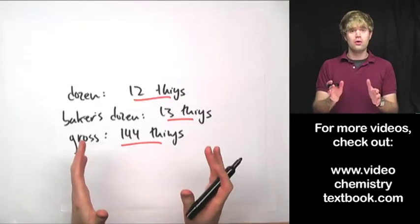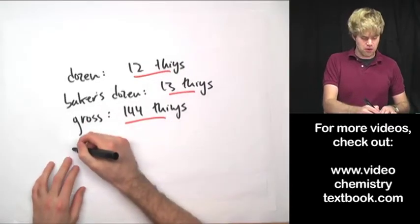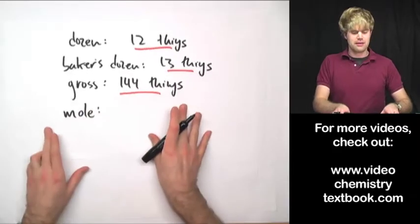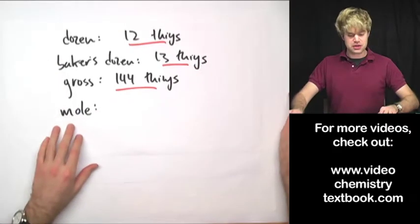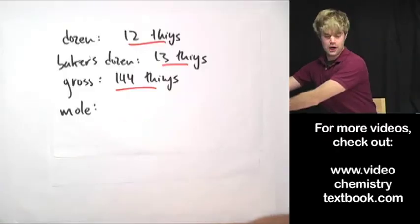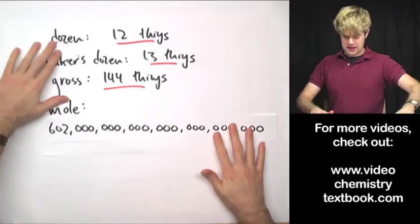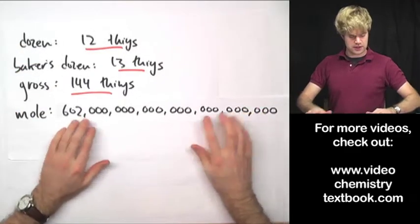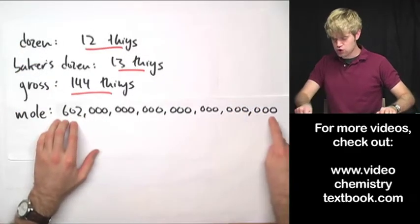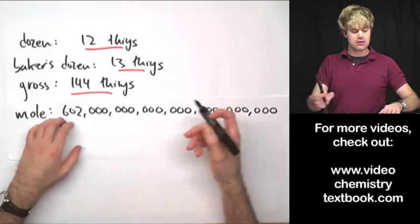The mole is exactly the same. The mole is a number just like these other guys, except instead of 12, 13, or 144 things, there are 602 sextillion things in a mole.